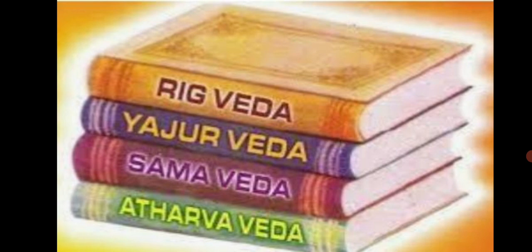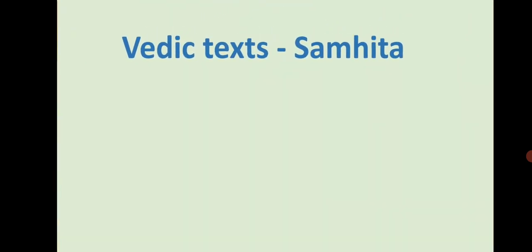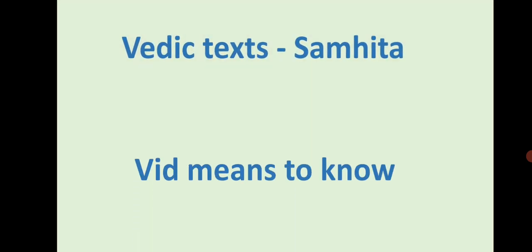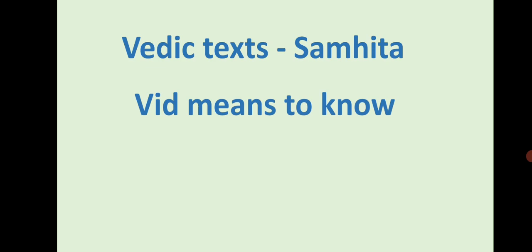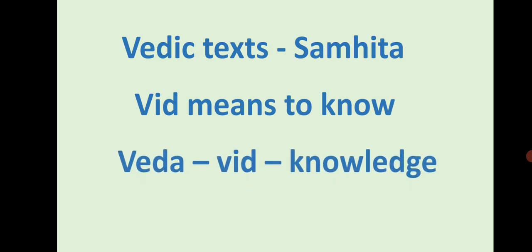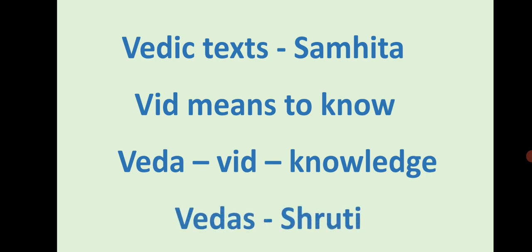The Rig Veda is considered to be the first text, and it is in the form of verses. There are four Vedas: Rig Veda, Yajur Veda, Samaveda, and Atharva Veda. The Vedic texts are known as Samhita. The term Veda derives from 'Vid,' meaning 'to know' or 'knowledge.' The Vedas have been preserved through the oral tradition and are also called Shruti.